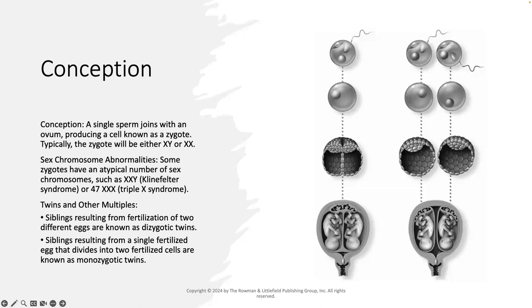Siblings resulting from fertilization of two different eggs are known as dizygotic twins, or fraternal twins. Siblings resulting from a single fertilized egg that divides into two fertilized cells are known as monozygotic twins, or identical twins. You can see here this is monozygotic twins, and here are two zygotes, which means dizygotic or fraternal twins.